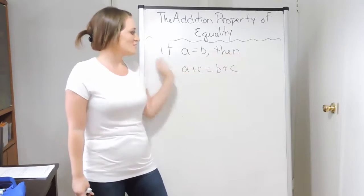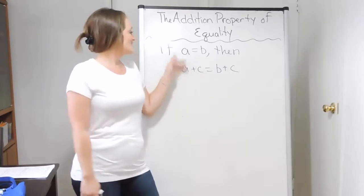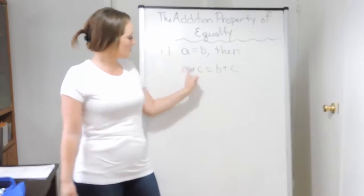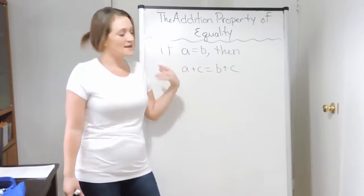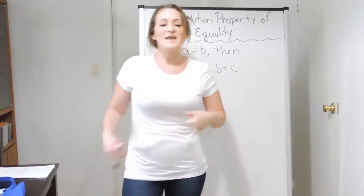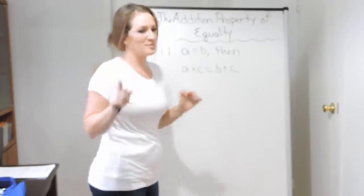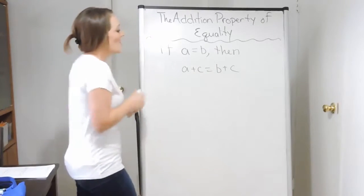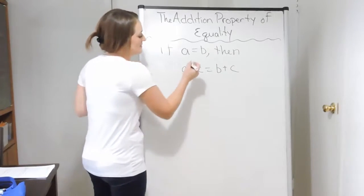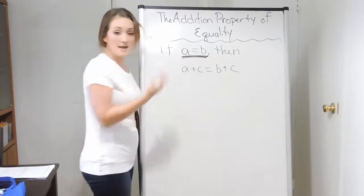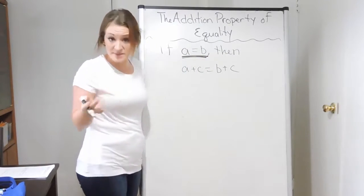This is what the book definition says right here. It says that if A equals B, then A plus C is equal to B plus C. What that actually means — I'm going to plug in some numbers here so maybe it could be a little bit more clear. So I'm going to start off with this top part here, if A equals B, which means they're the same thing. So I'm just going to say 10 equals 10.